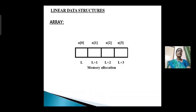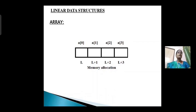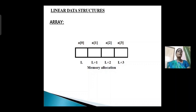First, arrays. An array is nothing but a group of similar data elements that share a common name. This is the array memory allocation. A[0], A[1], A[2], A[3] are the indexes, and L, L+1, L+2, L+3 are the addresses of memory allocation.